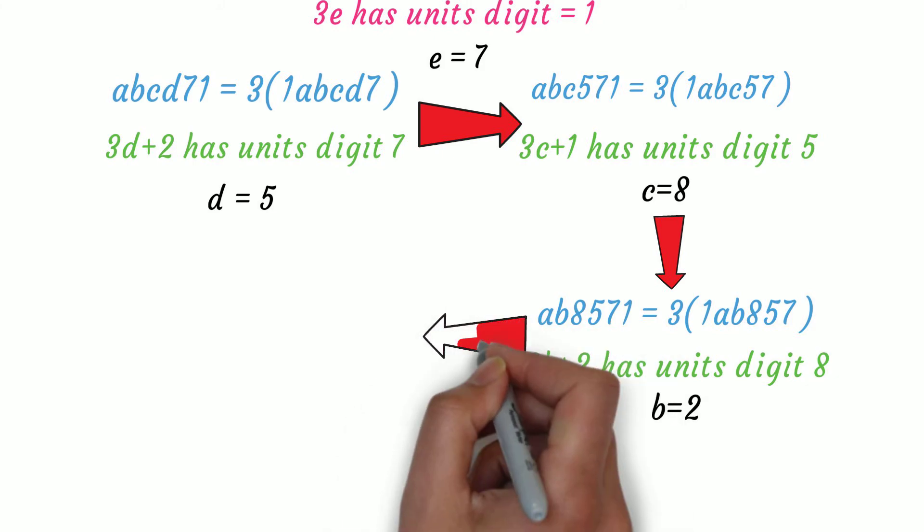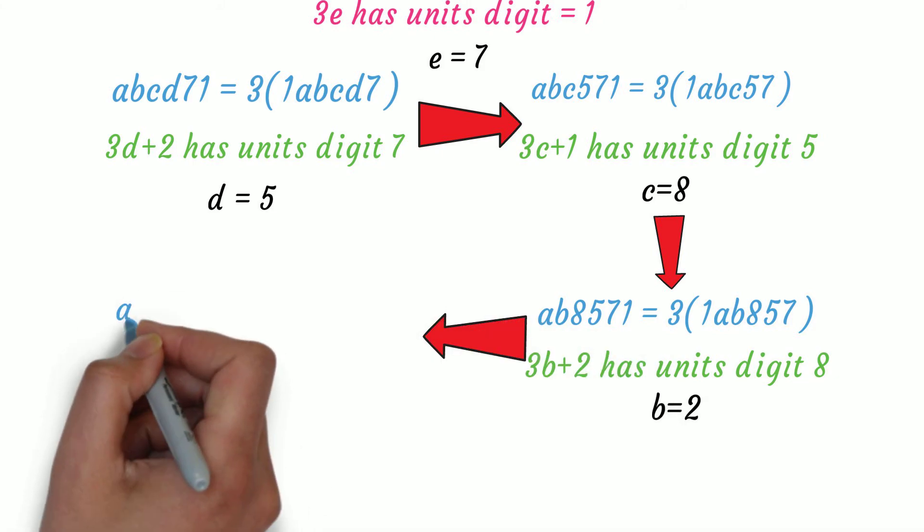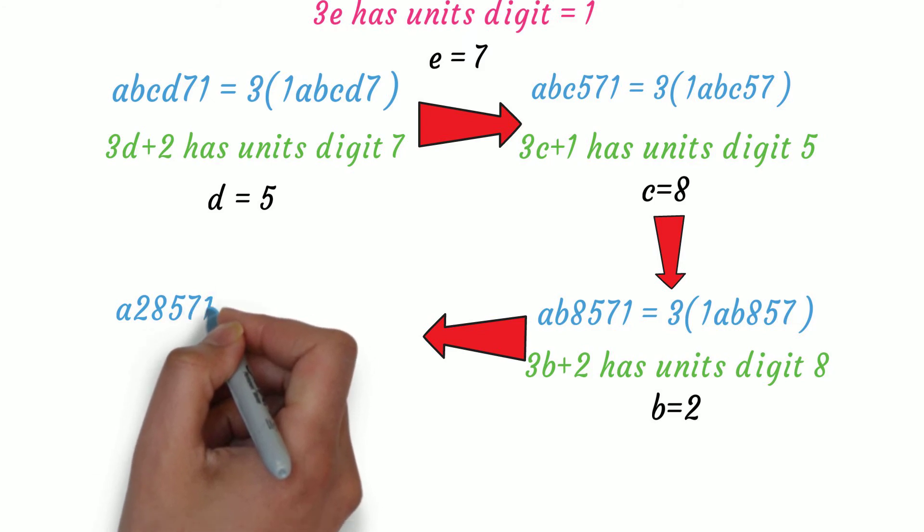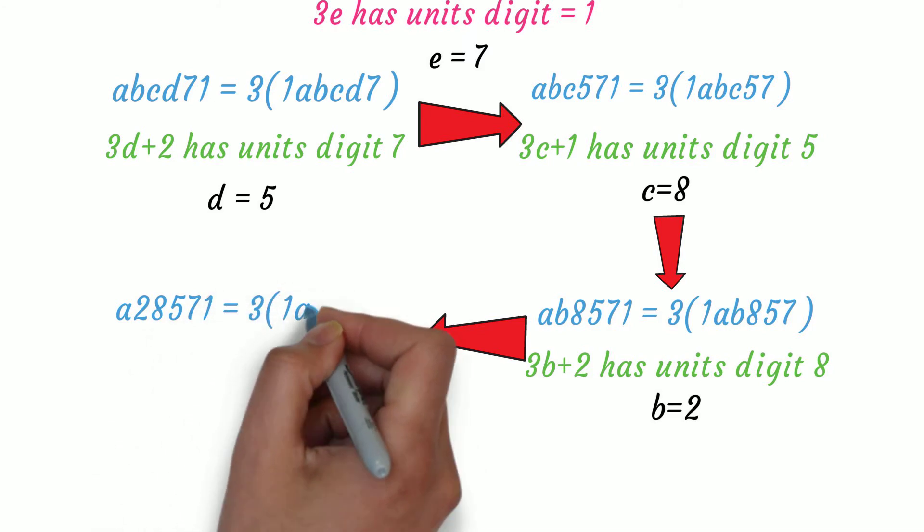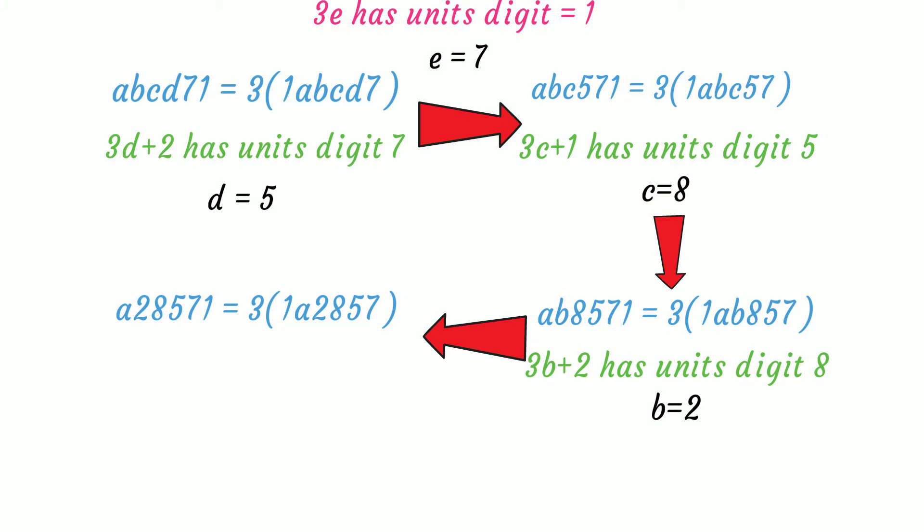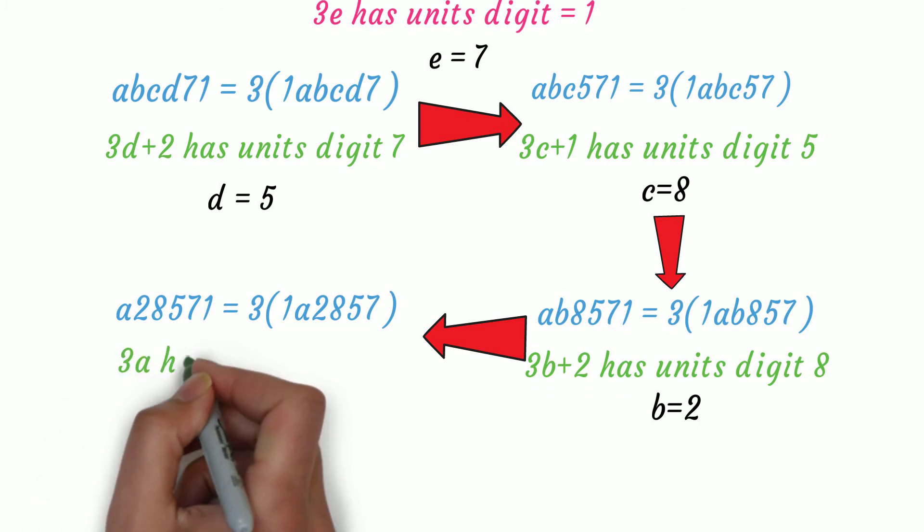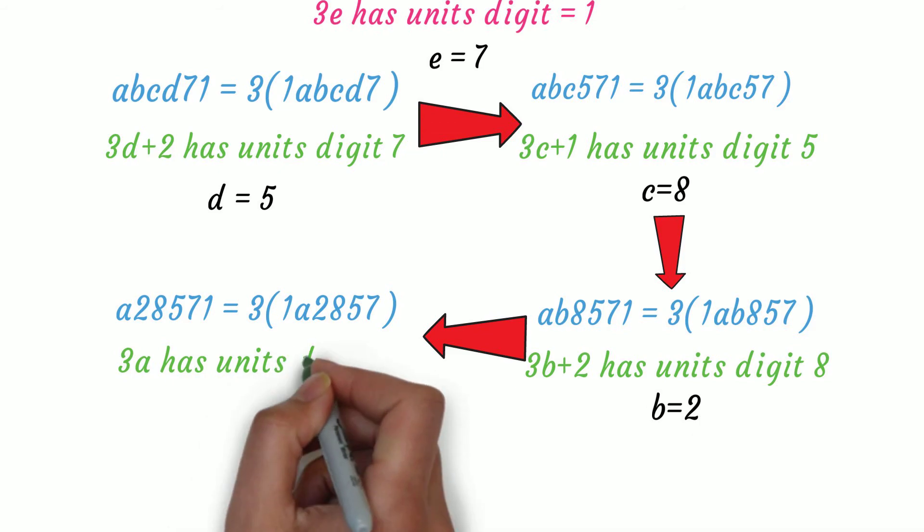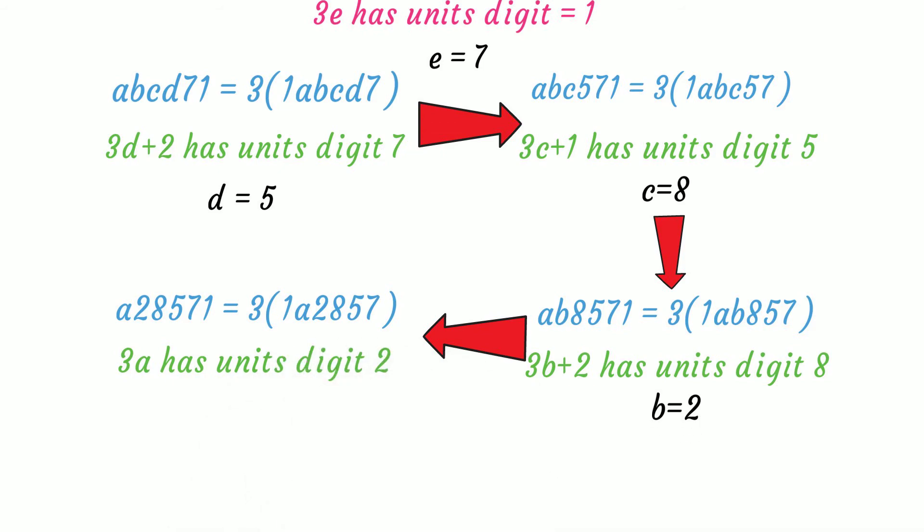Substituting this back, finally, we get a28571 equals 3 into 1a2857. Now, multiplying 3 with a, we don't get any carryover to add. So, we are left with 3a has a unit digit of 2. This gives a equals 4.